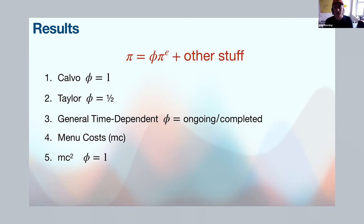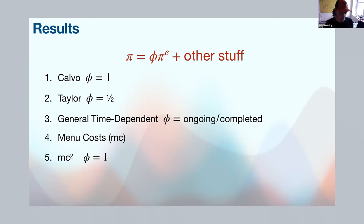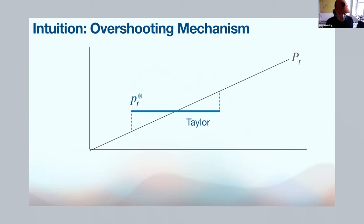Here are the results I find. In the Calvo model, you do get a pass-through of one — but through correct reasoning, not the usual argument. People had the right answer for the wrong reasons. However, the Taylor model, which I think is actually very descriptive of many goods — think services, products with annual price reviews like Apple or Netflix — has a much lower pass-through of about one half.